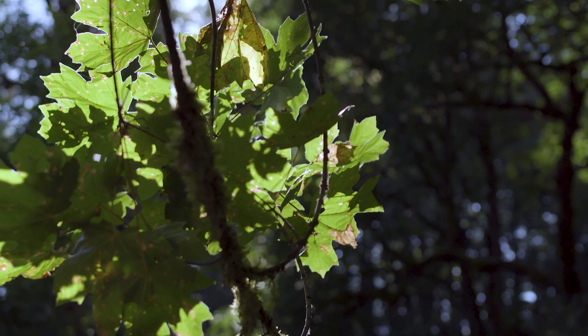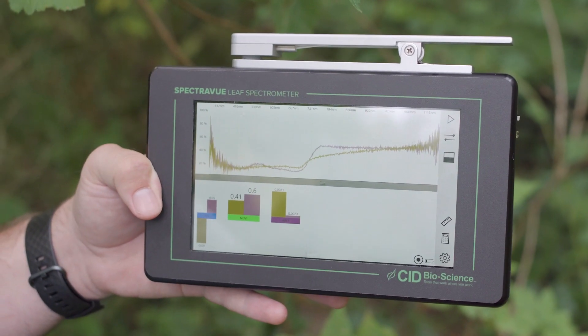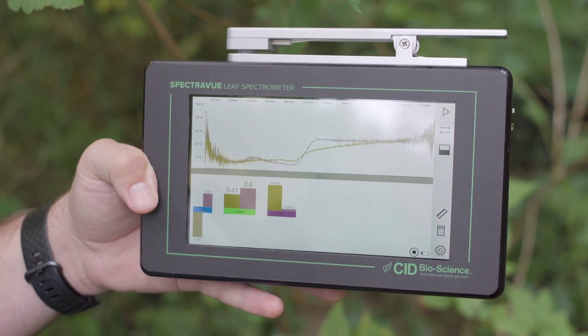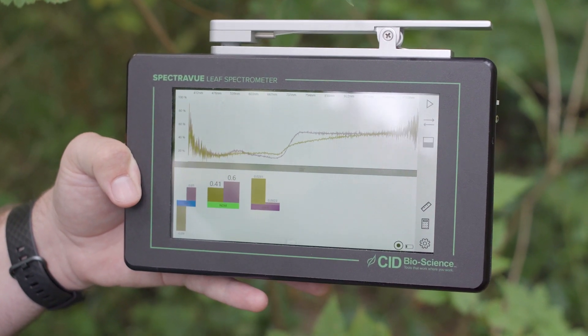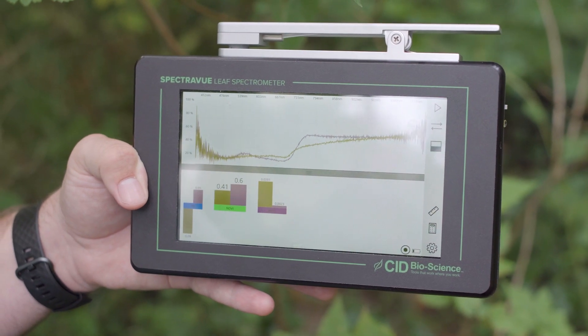So now that we've taken our two measurements, the first one of the healthy leaf and the second one of the unhealthy leaf, I want to show you how that data is displayed and visualized on the home screen of the SpectraView.